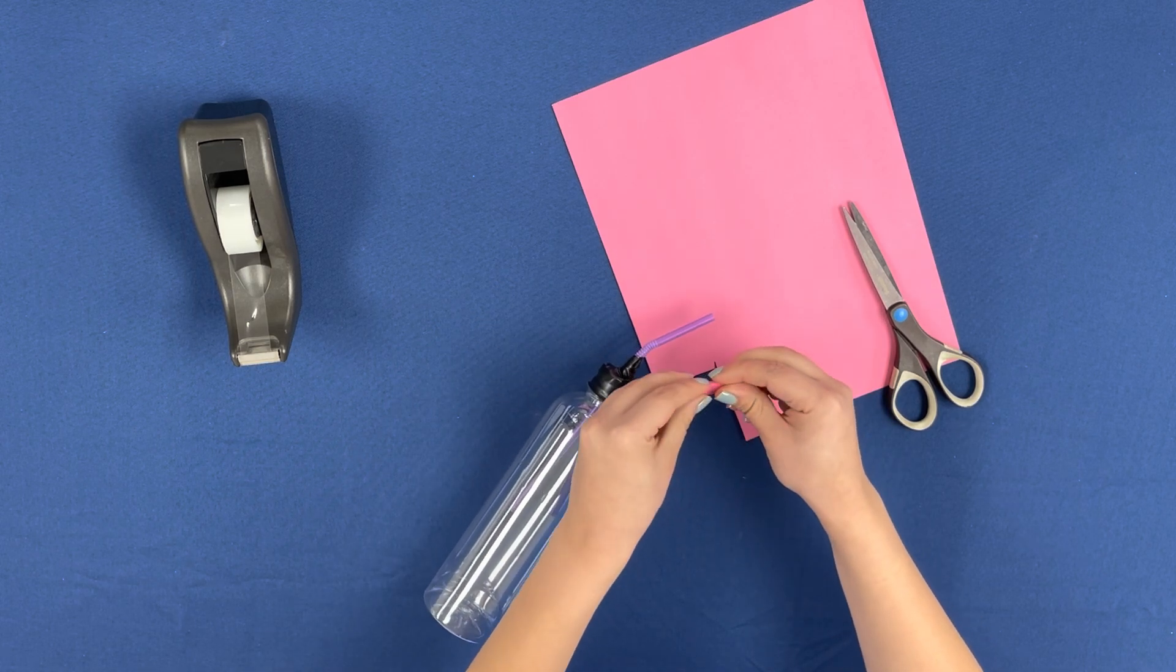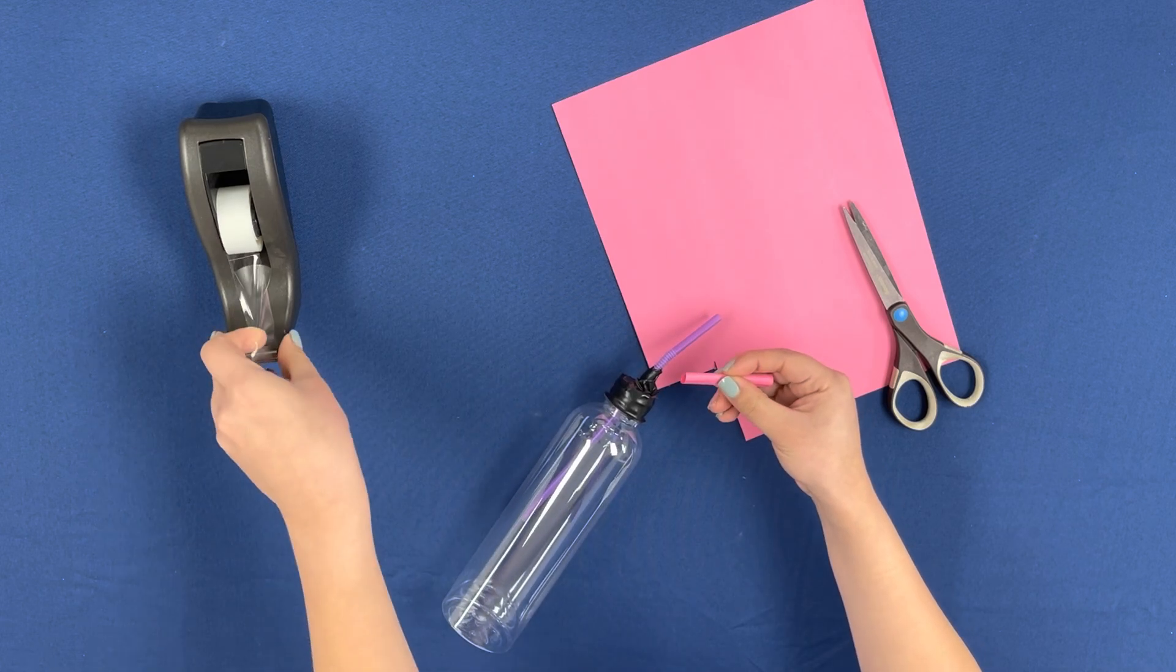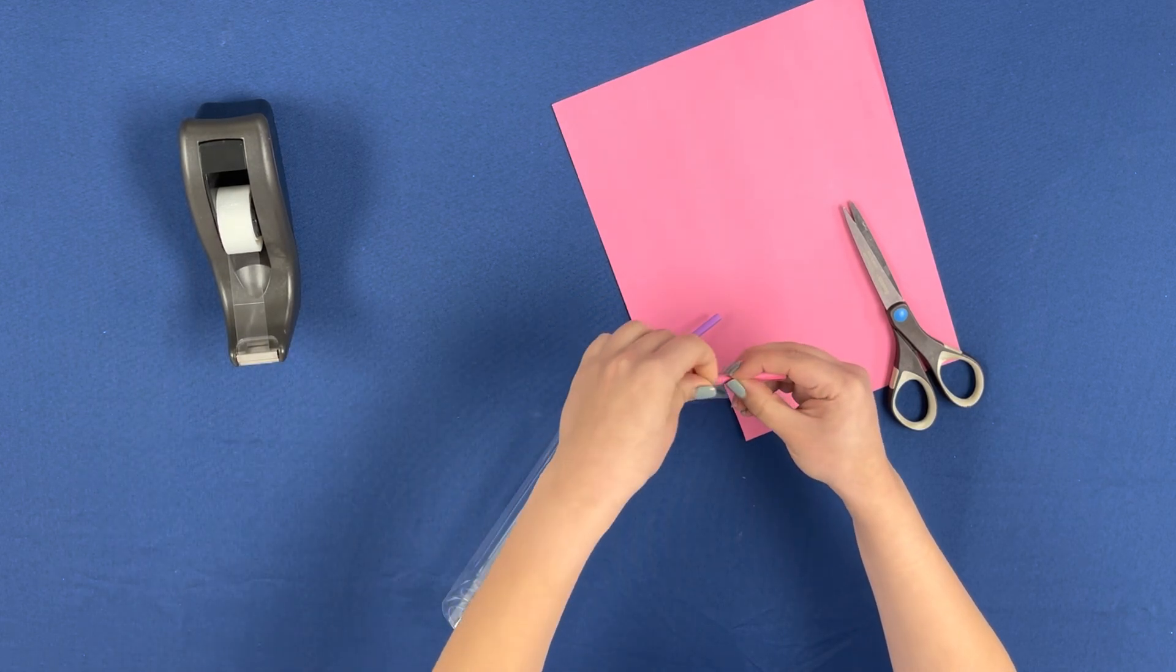Using tape, you are going to secure the piece of paper, making sure that it fits snugly around the straw.